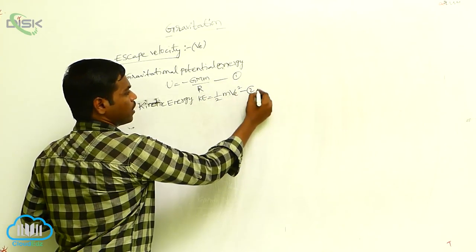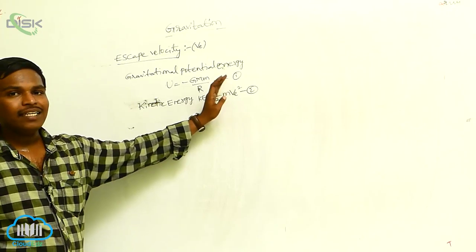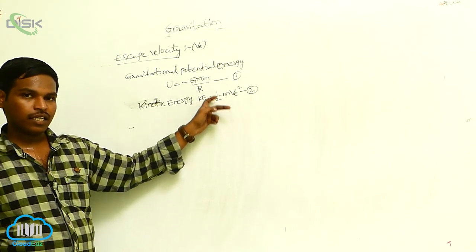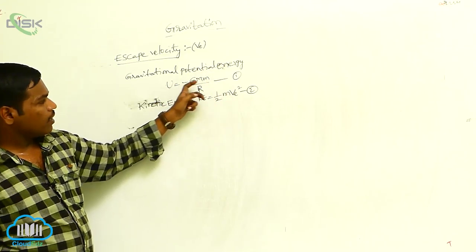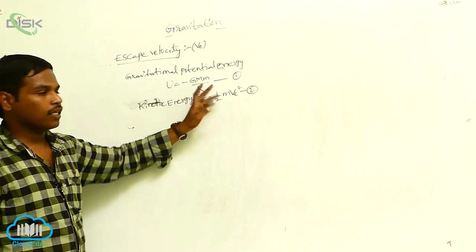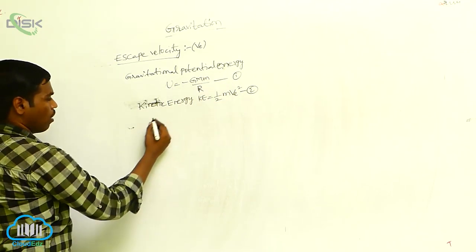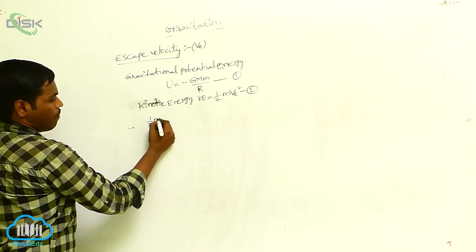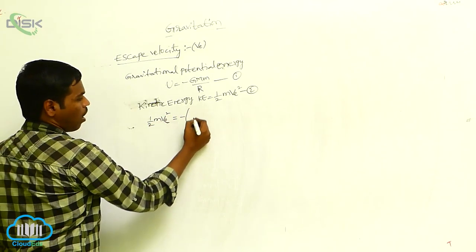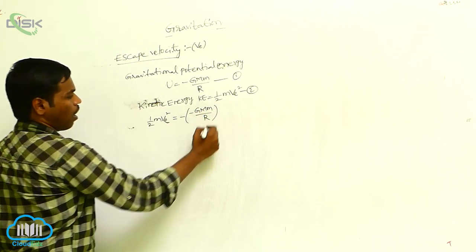These two energies are equal and acting in the opposite direction — the kinetic energy and the gravitational potential energy. Then these two equations are equal. Half m Ve squared is equal to minus half minus GMm by R.